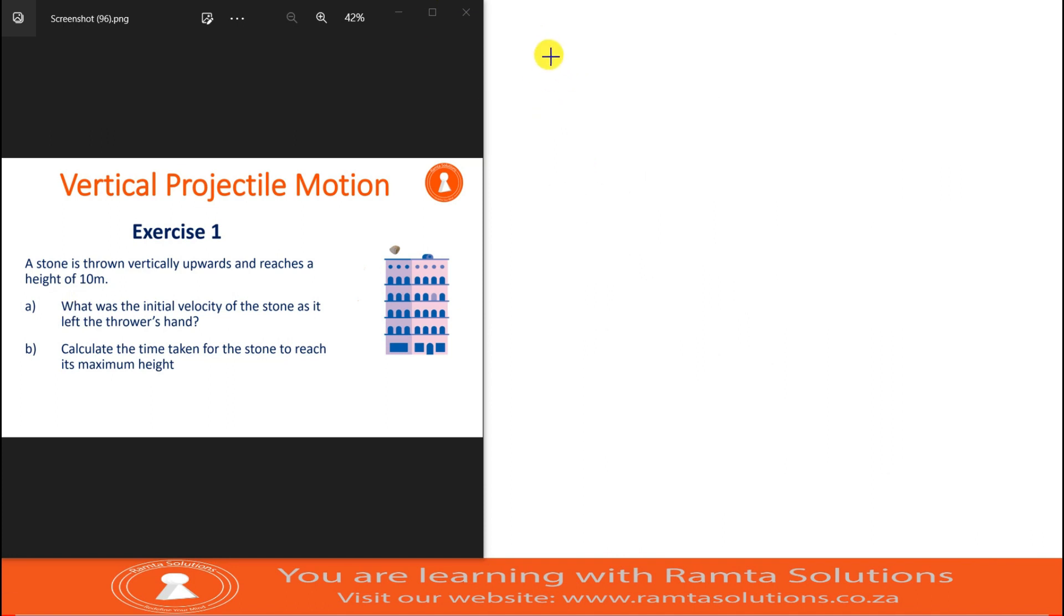Now number b, they say calculate the time taken for a stone to reach maximum height. Remember we're looking for delta t. Already we have final velocity which we know to be zero, we have delta y which we know to be 10, and we just calculated initial velocity which was 14 meters per second upwards.